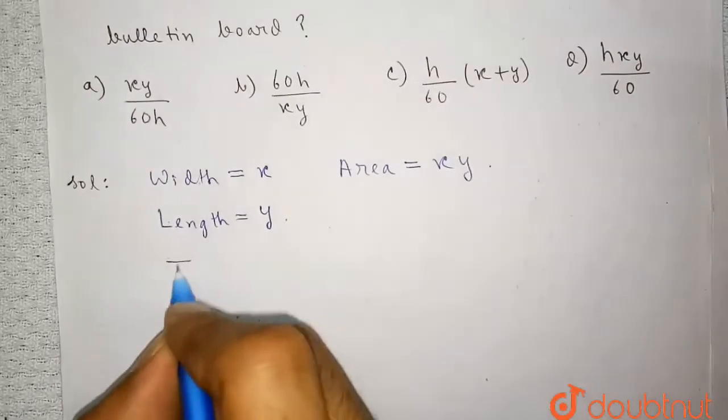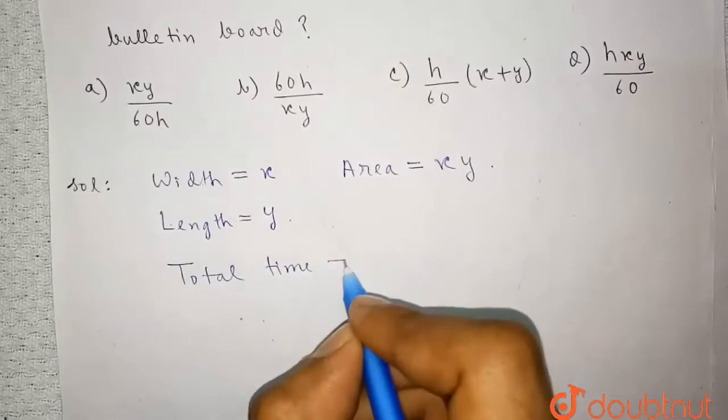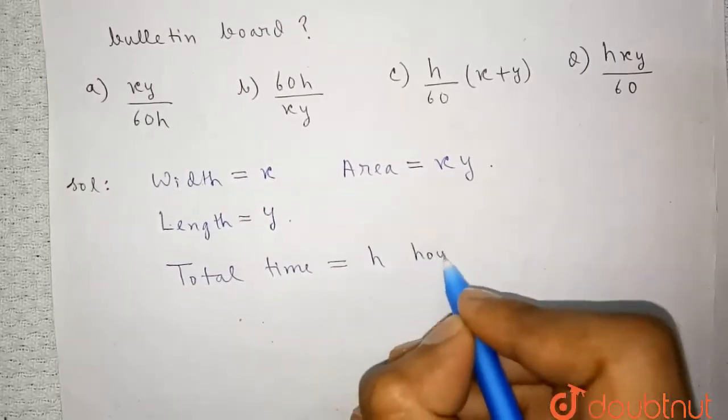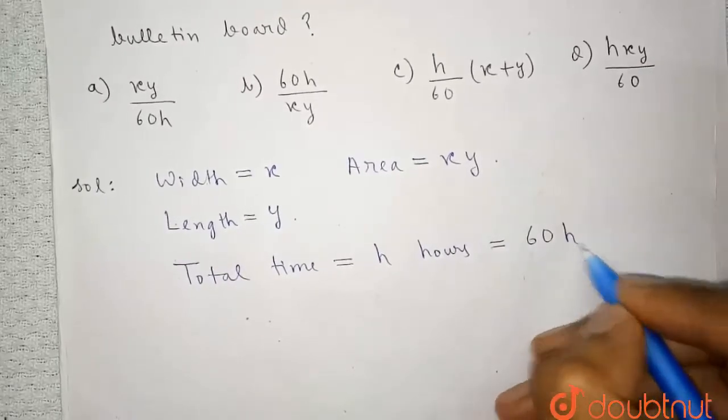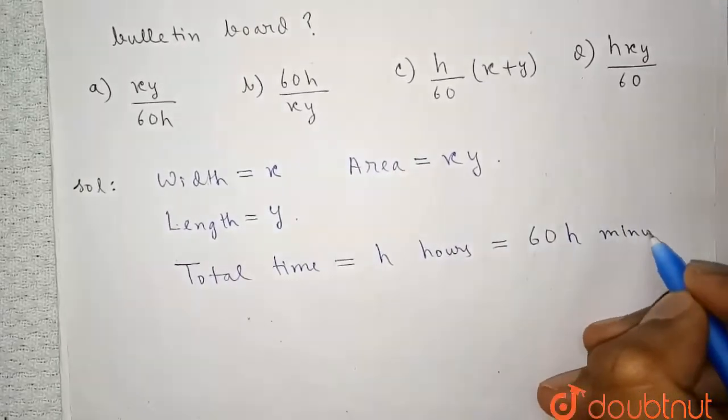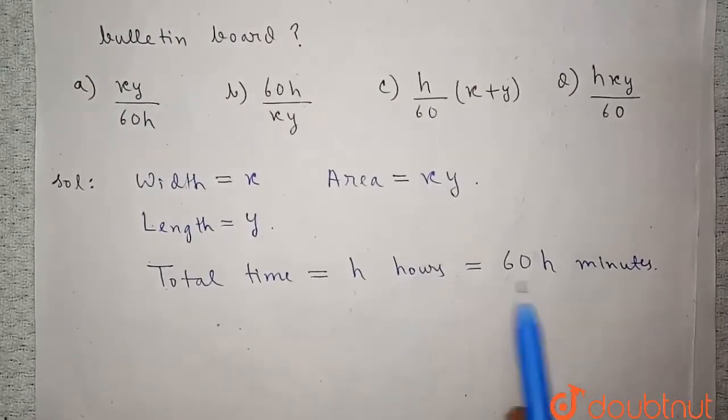So total time it takes is H hours or we can say that 60H minutes because one hour is 60 minutes. So H hour is 60H minutes.